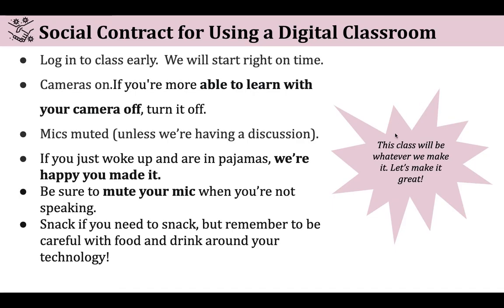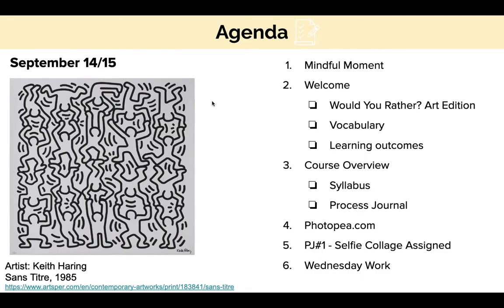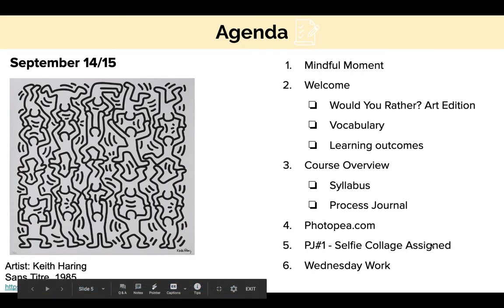Welcome. So this is what you're going to be doing today if you missed the class. We're going to go over the basics here in this lecture. We didn't get a chance to do the Would You Rather in class, so we're going to skip to the course overview. You are going to read the syllabus and sign the acknowledgement in Schoology, make a copy of the process journal and share it with me, and then watch a tutorial for photopea.com if you choose to do so.